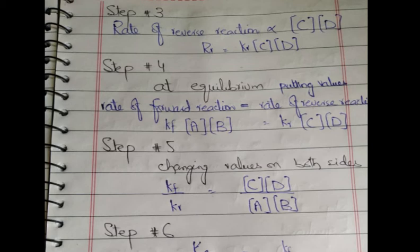Step number four: at the equilibrium state, the rate of forward reaction is equal to the rate of reverse reaction. When the rate of forward equals the rate of reverse, we say kf[A][B] is equal to kr[C][D]. Here, small r and capital R and small f indicate the respective rates. So Rf is equal to Rr at equilibrium.